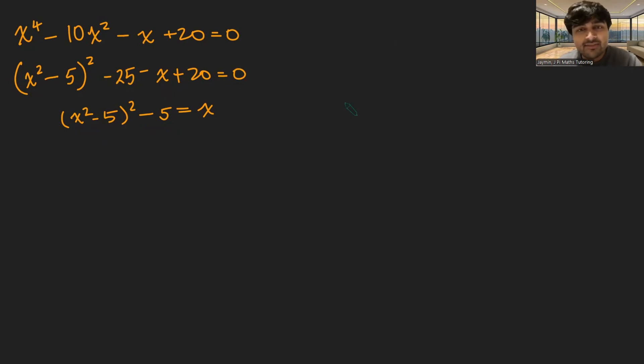What we're going to do is suppose that we have some number alpha, such that alpha squared minus 5 equals alpha. Then what I'm going to do is square both sides of this equation. I don't need to even expand this. I'll just keep this alpha squared minus 5 squared, and that's going to equal alpha squared.